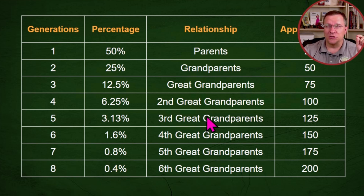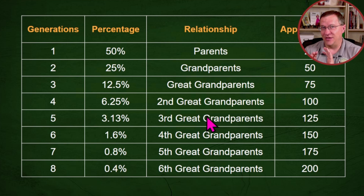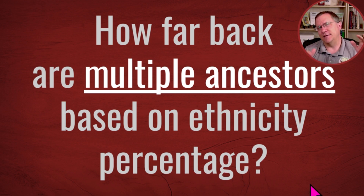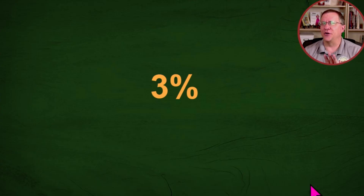One of the most common comments I got from that video was: what if it's actually two different ancestors, or three or four different ancestors, that were contributing to that one ethnic group showing up on your results? Let's update this and ask how far back are multiple ancestors based on an ethnicity percentage. Let's start off with just three percent.